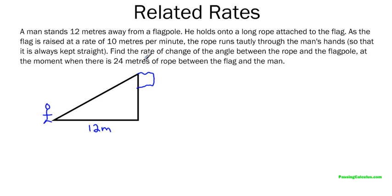So he holds onto a long rope attached to the flag that is raised 10 meters per second. So I'm going to call this distance, so this flag is moving up here, so I'm going to call that Y. Just because it's in the up and down direction. So dy over dt.